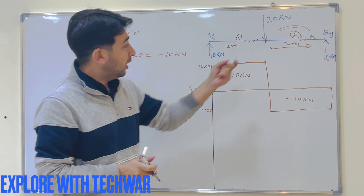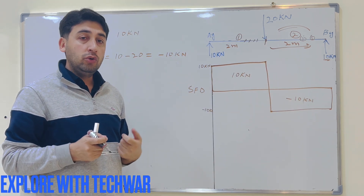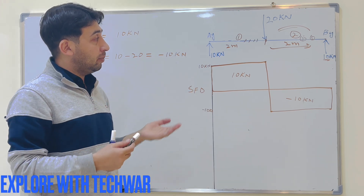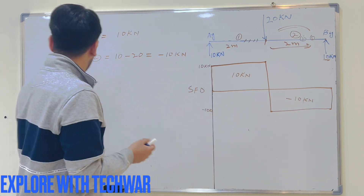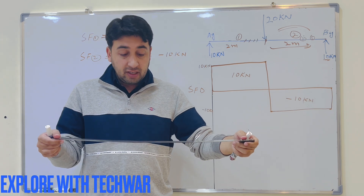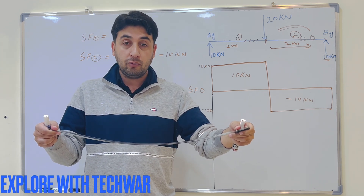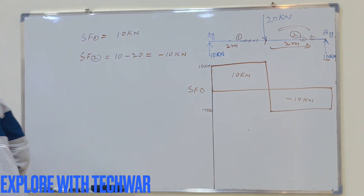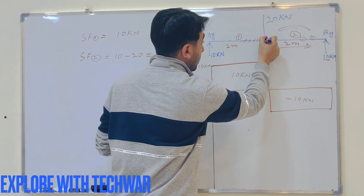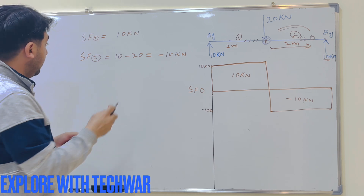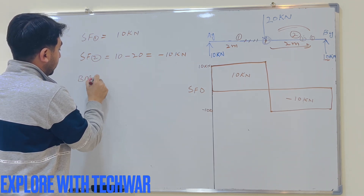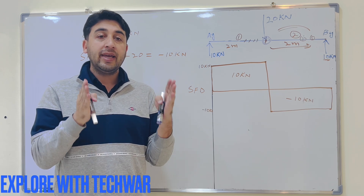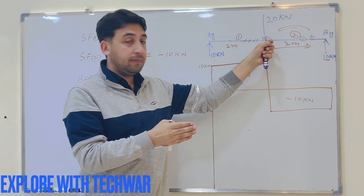Now we will find the bending moment. We are usually most interested in the maximum bending moment. If a force is applied at the center of a beam, the beam bends most at that point, so the maximum bending moment will be exactly where the force is applied. The bending moment at that point equals the sum of all moments produced by external forces on either side.